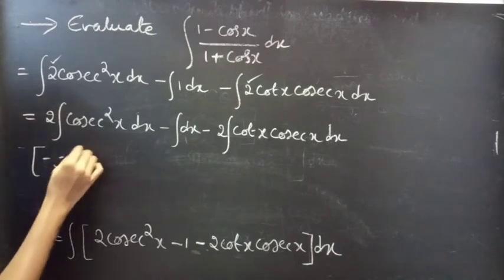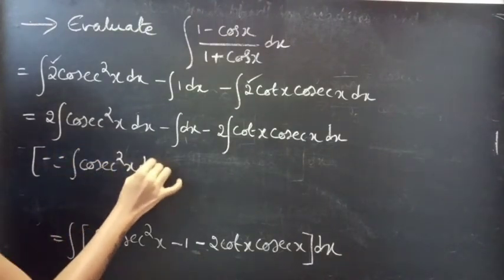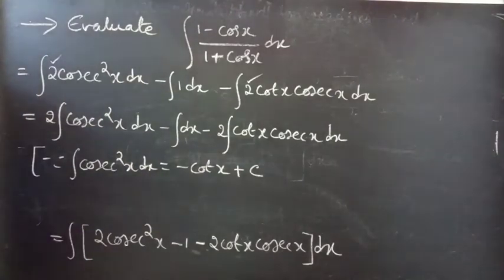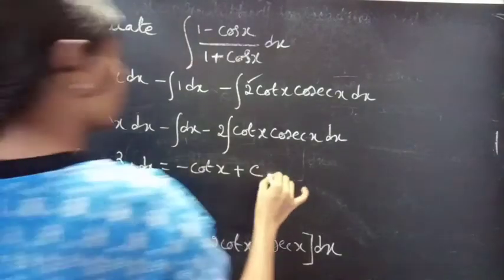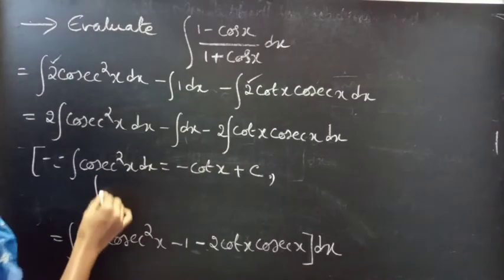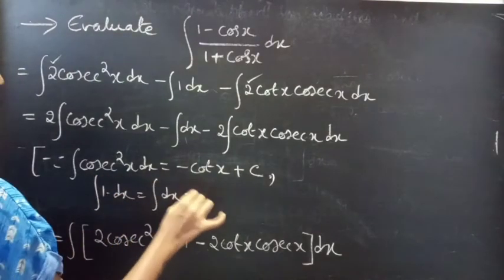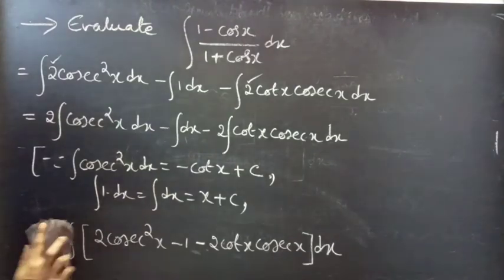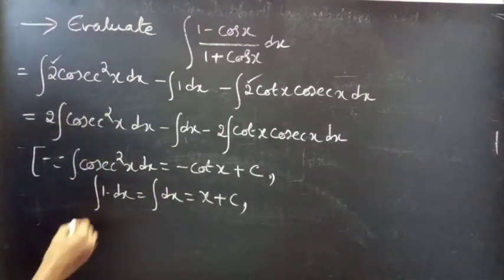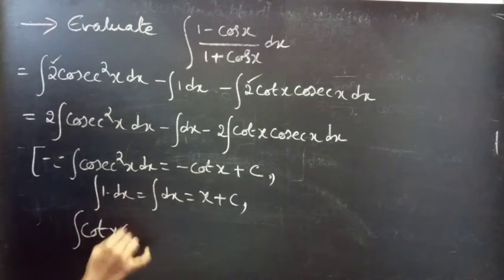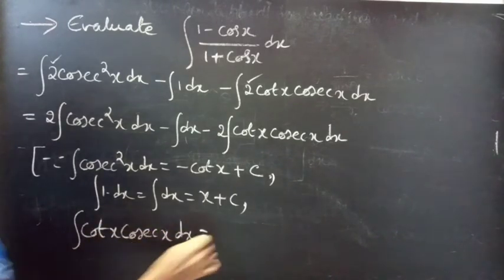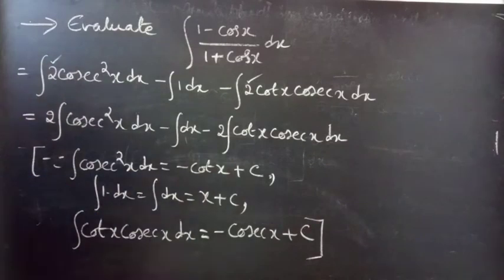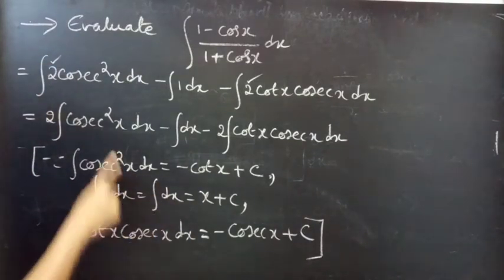We apply the standard formulas: integral of cosecant squared x dx equals minus cot x plus C; integral of dx equals x plus C; and integral of cot x times cosecant x dx equals minus cosecant x plus C. Now we apply these formulas.